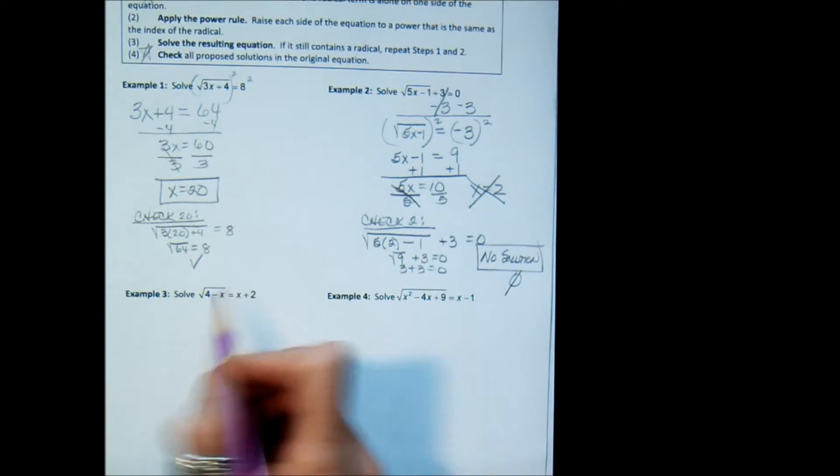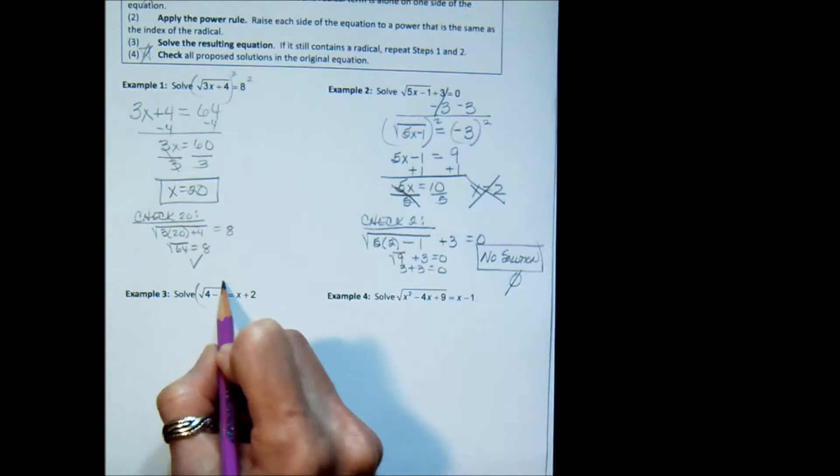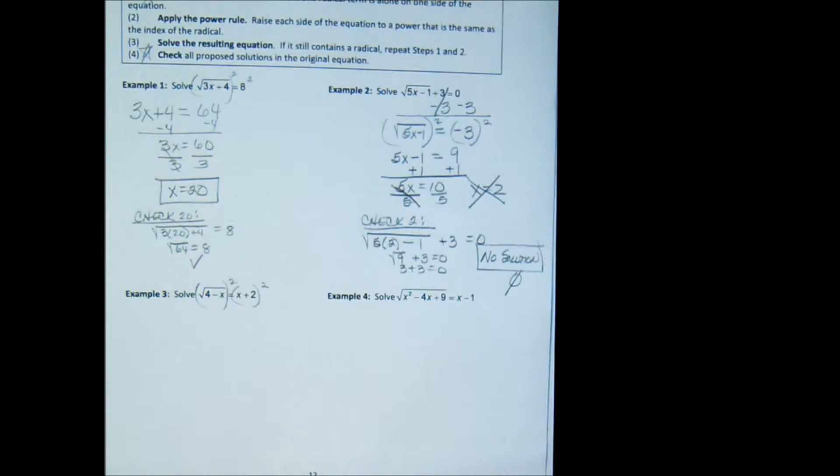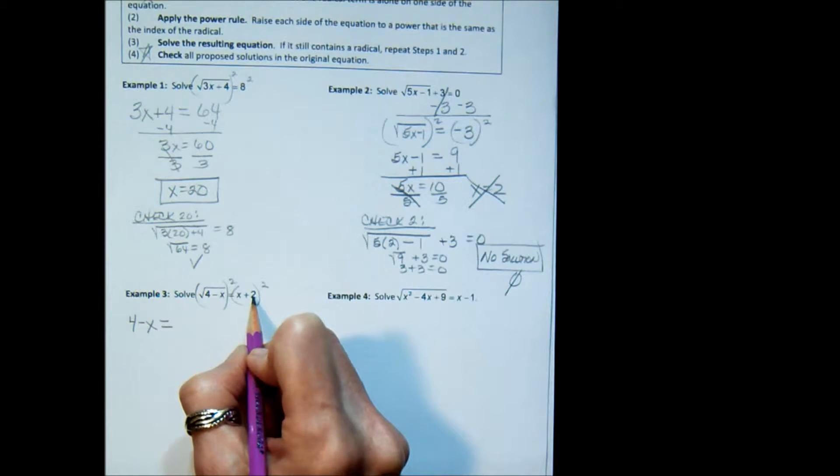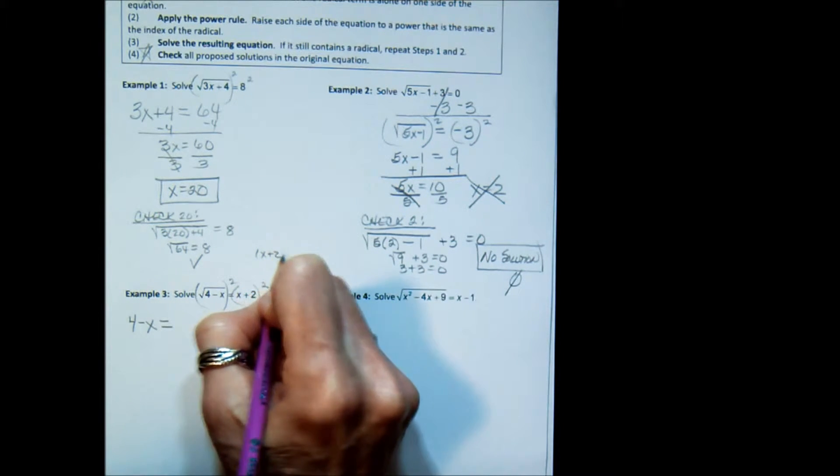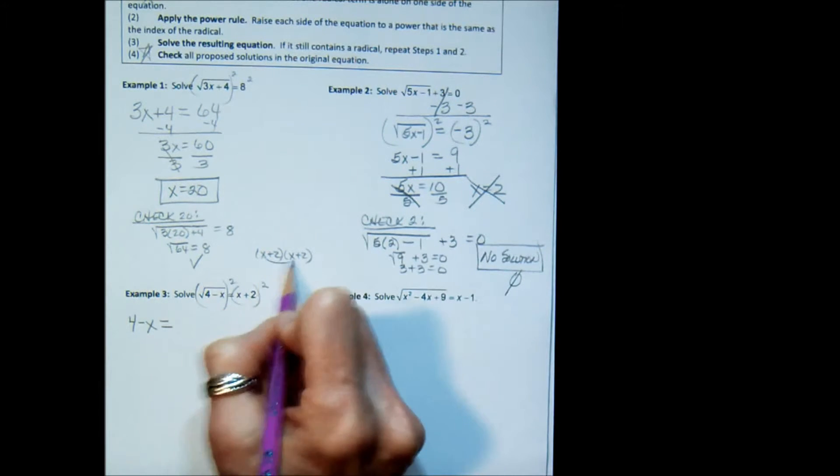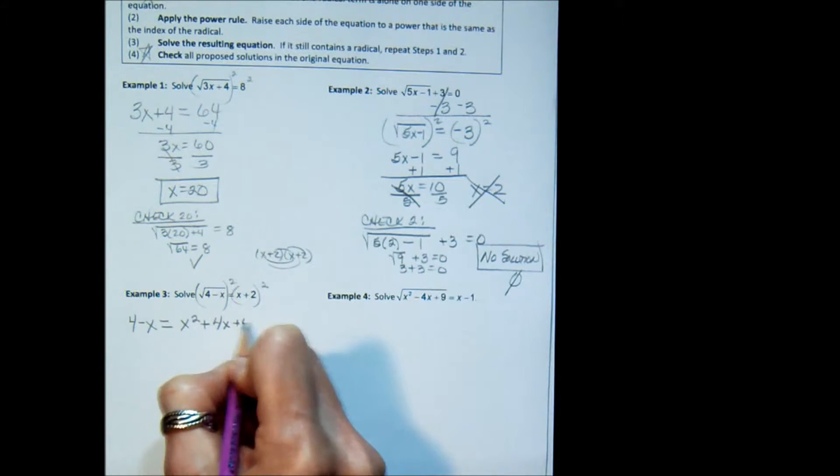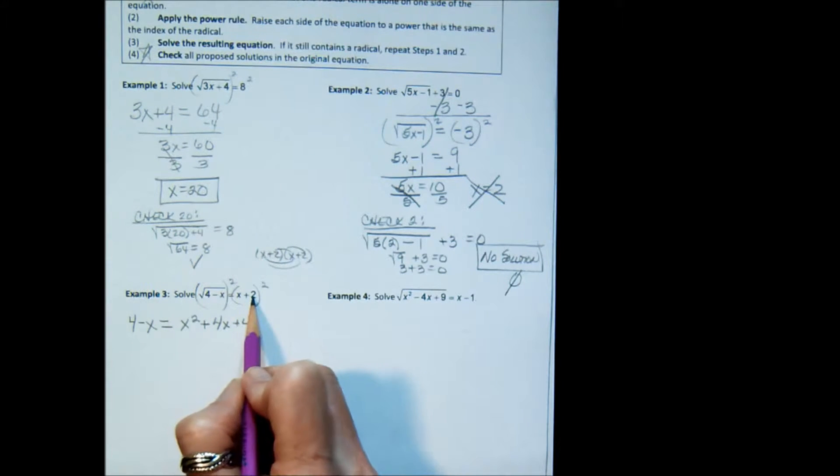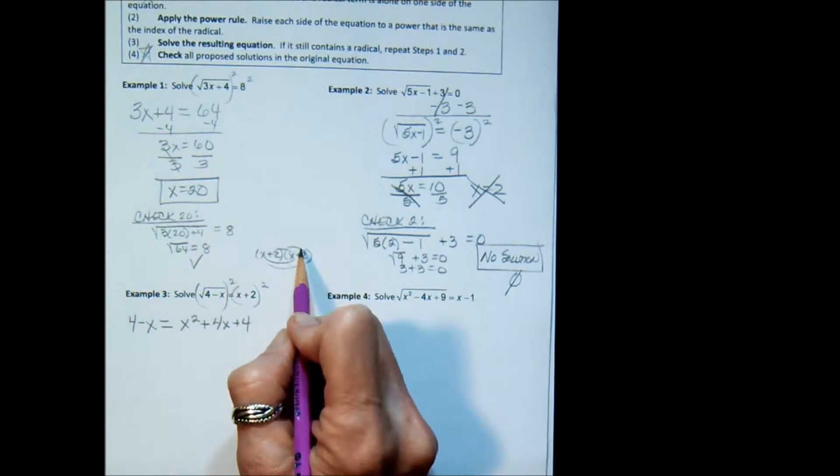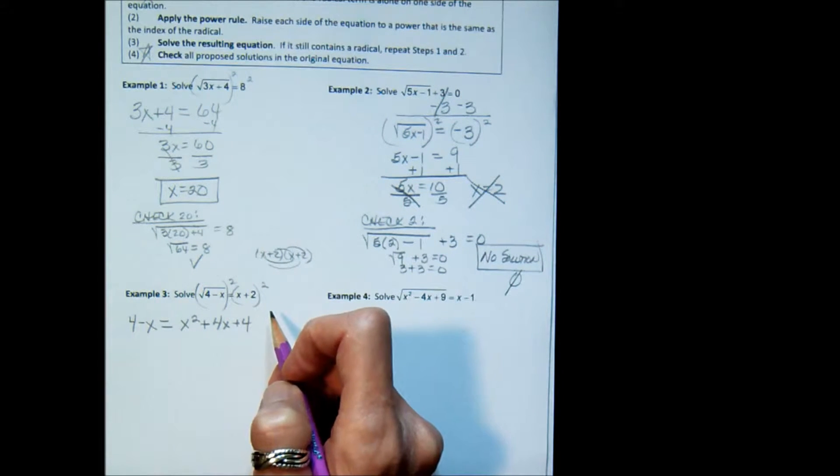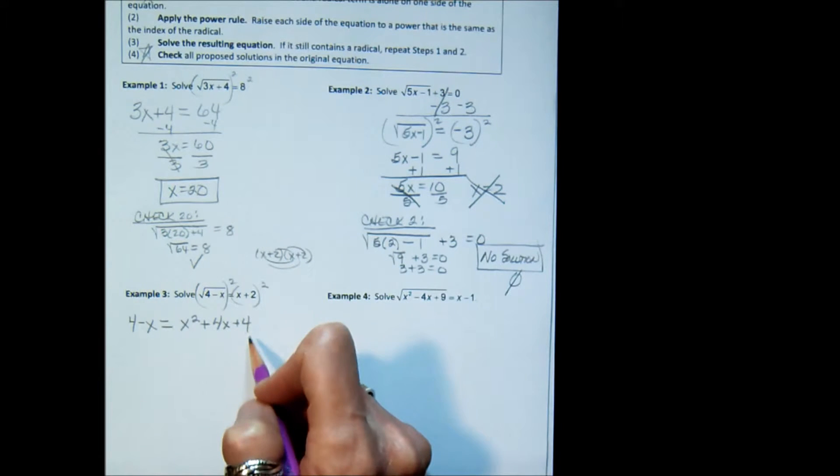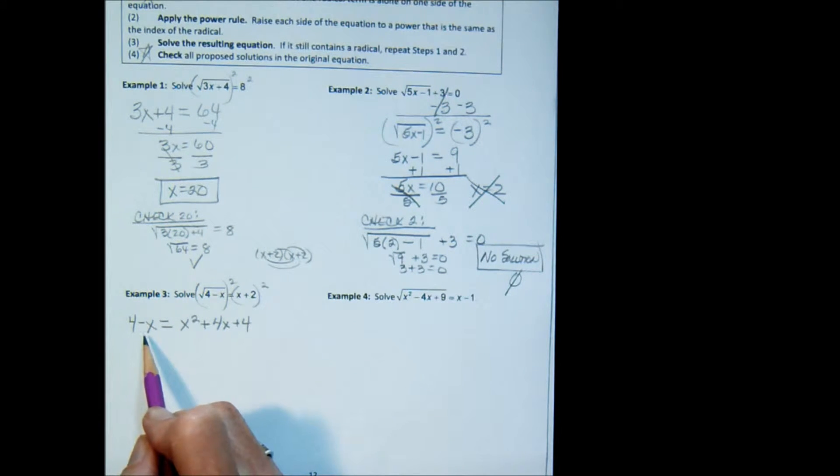Let's look at example 3. The radical's isolated, so I'm ready to square both sides. Square root of 4 minus x squared is 4 minus x. Now, very carefully on this side, it's x plus 2 times x plus 2 foiled out. And what you do is you get x squared plus 4x plus 4. Don't just think that is x squared plus 4 because it isn't. Go up there and foil it out. You get a trinomial.